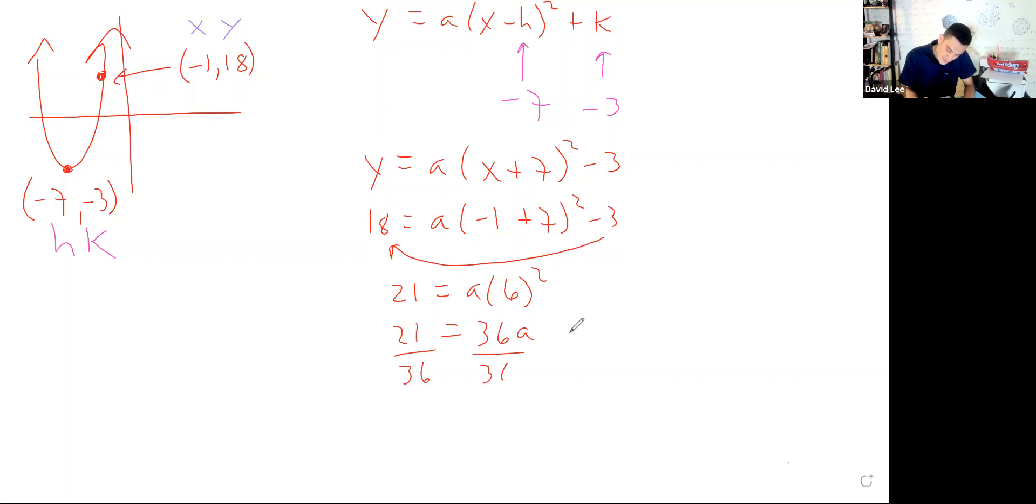So 21 = 36a. Divide by 36, reduce the fraction. We discover that this would be 7/12. If you reduce this fraction by 3, you get 7/12. Now we'll take this 7/12 and deposit it right there. So for number 1 part a, our final answer for the equation would be: f(x) = (7/12)(x + 7)² - 3.